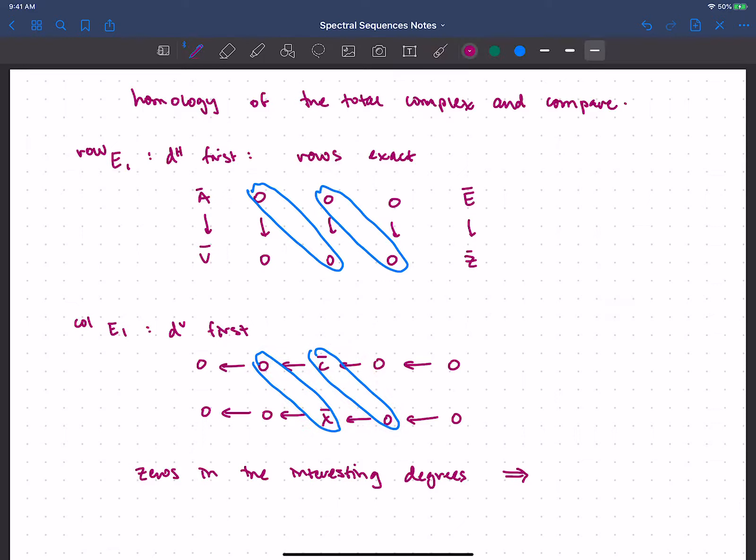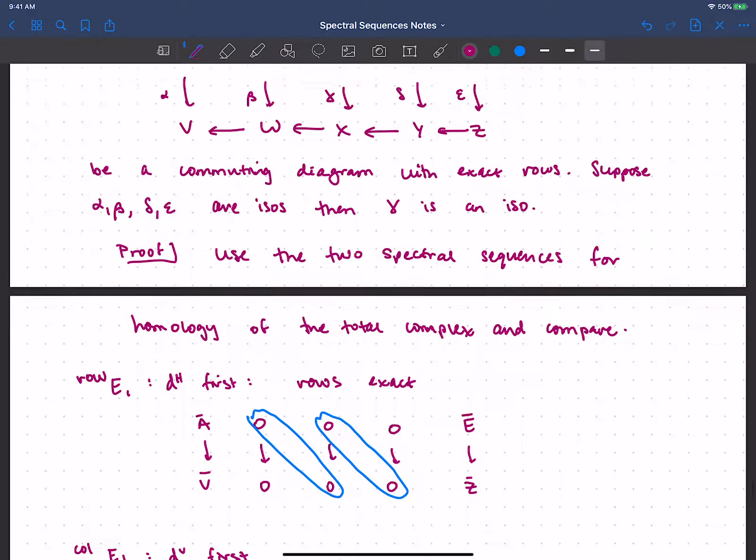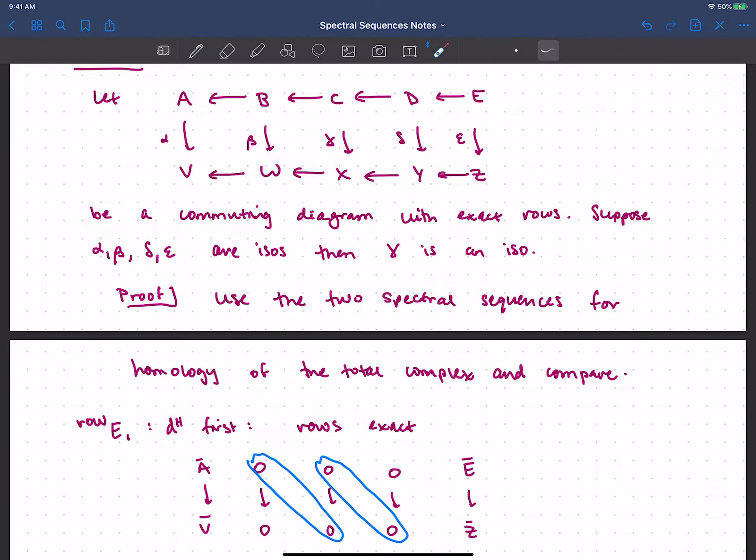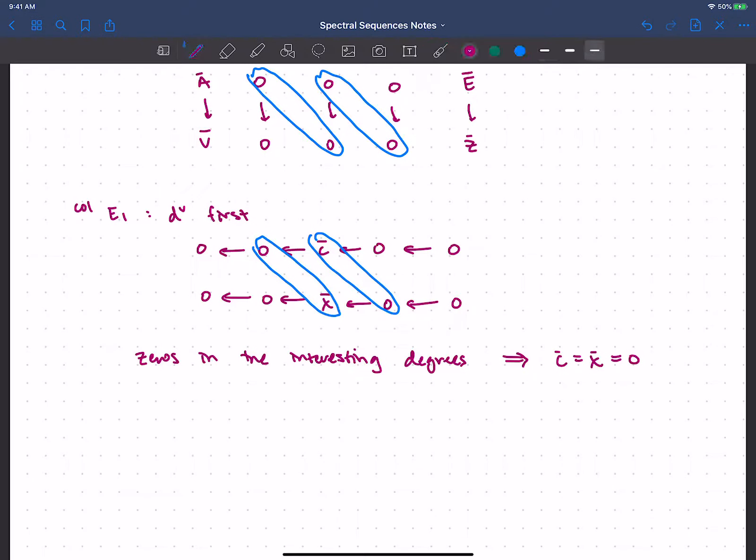And so it's got to be that this X bar and the C bar, whatever they are, they're going to converge to the same thing. Then that has to be zero. So C bar is the same as X bar is equal to zero. But how did C bar and X bar show up? Well, we took homology here with respect to this vertical map. So C bar was just the kernel of that gamma, and X bar was the cokernel, suppose. And so since those are both zero, this tells us that gamma is an isomorphism.